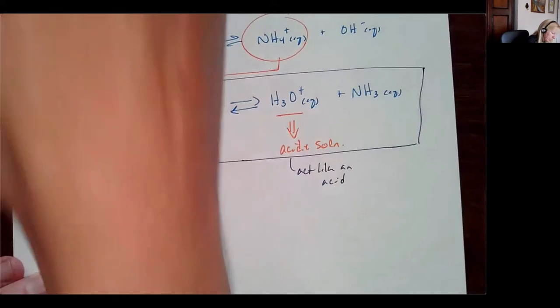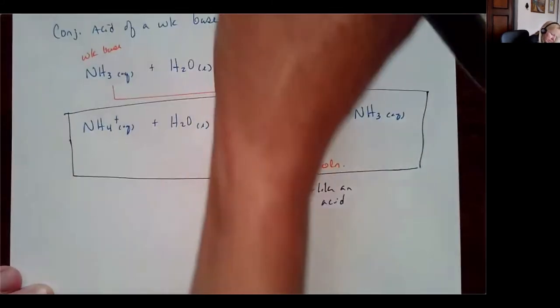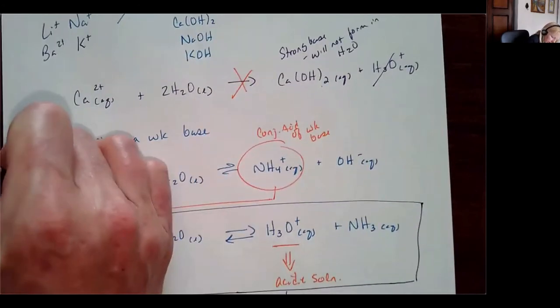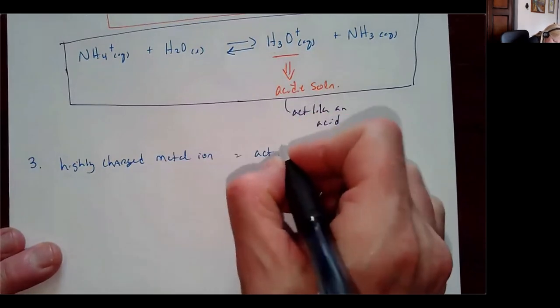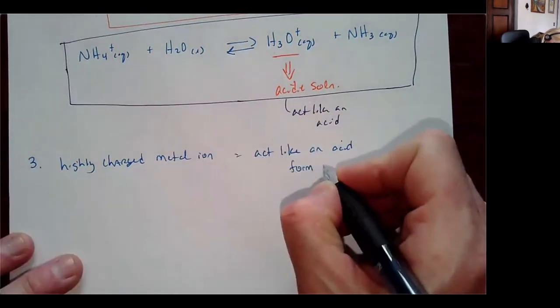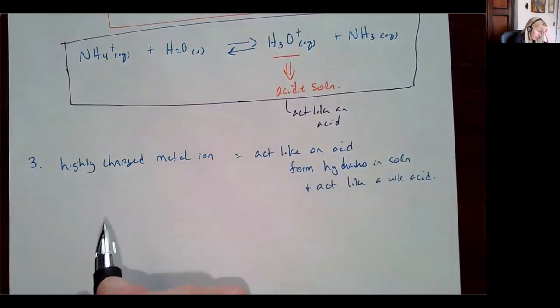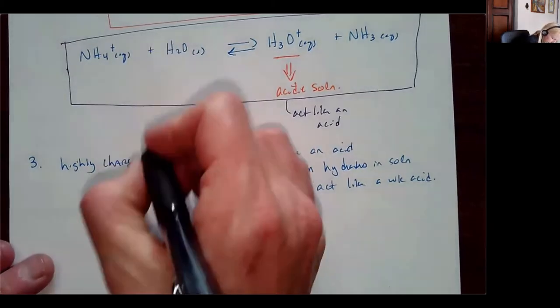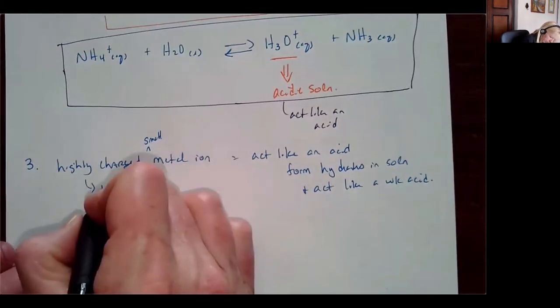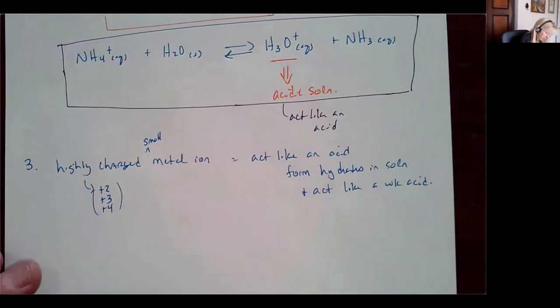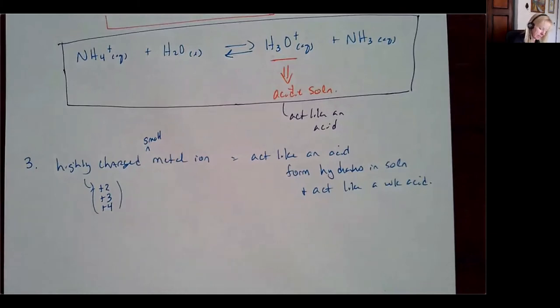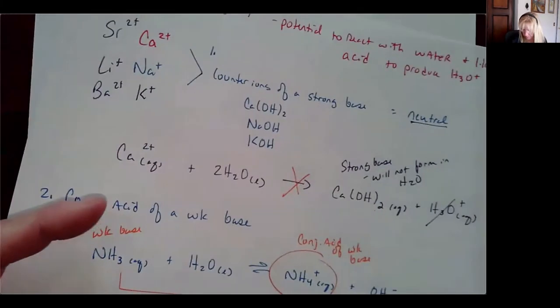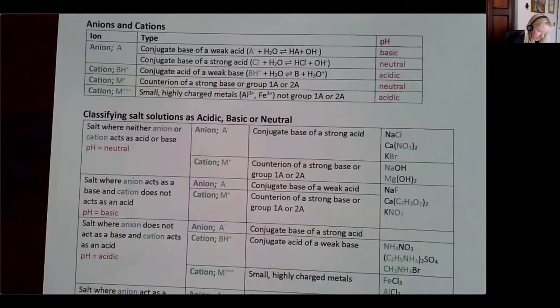The third type of cation to consider is small, highly charged metal ions — meaning +2, +3, or +4 charge. When these form in water they create a Lewis acid-base complex that changes the pH of the solution, making it slightly acidic. I won't go into much detail on this now; we'll return to it in later chapters.